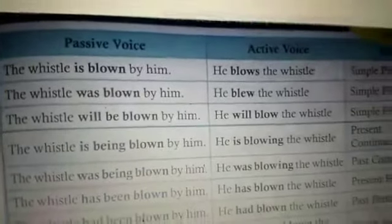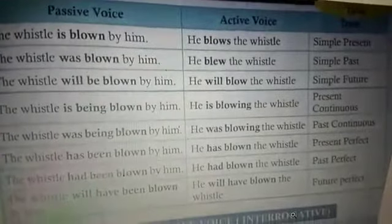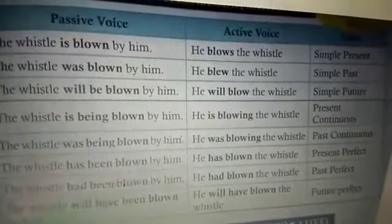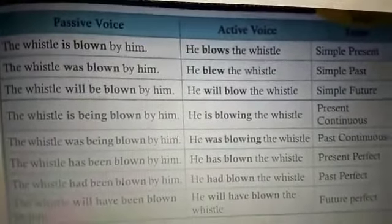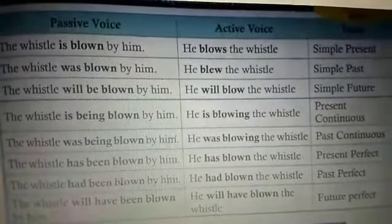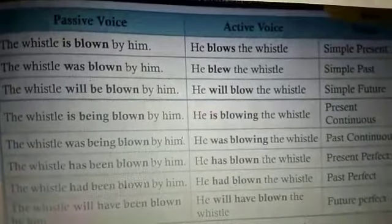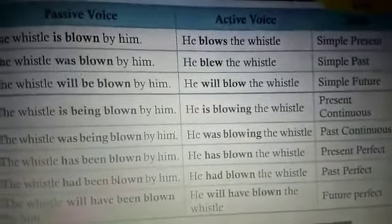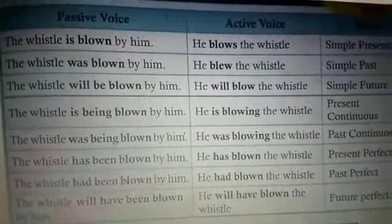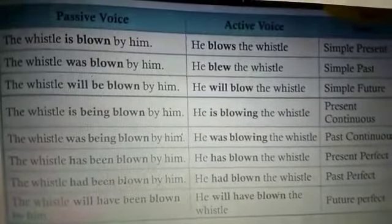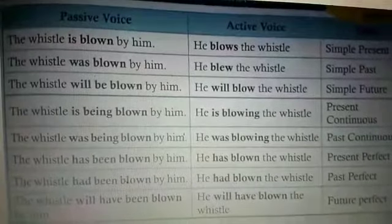Now we shall see the comprehensive table — passive to active voice, all tenses, dealing with statements only. Passive 'The whistle is blown by him' → active 'He blows the whistle' (simple present). Passive 'The whistle was blown by him' → active 'He blew the whistle' (simple past). Passive 'The whistle will be blown by him' → active 'He will blow the whistle' (simple future).